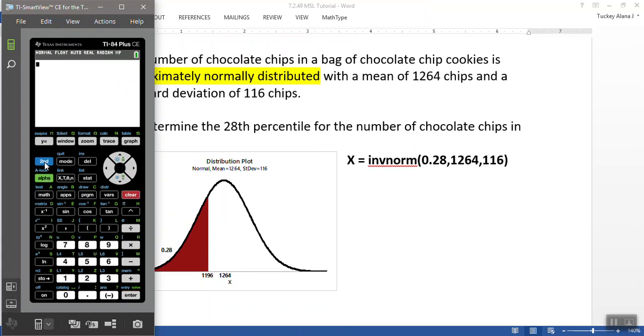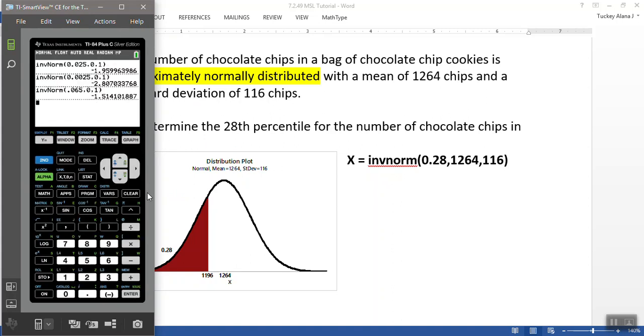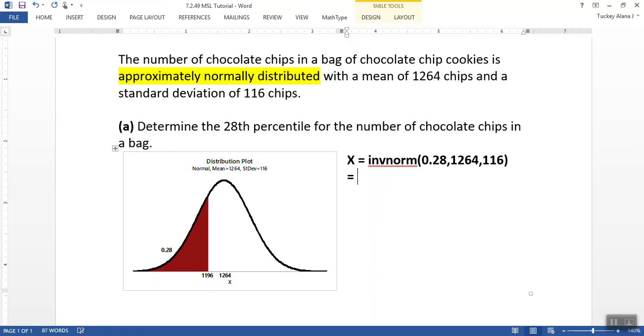So let me grab the calculator real quick. The computer ate my video, so distribution number 3, inverse norm, 0.28, 1264, 116, and I'm going to say left, and press paste and enter. Now, old calculators, you don't have to worry about the left thing. It's there already. So newest calculators need the left part. So let me change my view to a different model so you can see the old model. I would go second distribution, number 3, and I would just say 0.28, 1264, 116. There's no left, center, right option. So that's what I would press, and I would get the same answer, which is 1,196 chips, which matches what the computer program Minitab gave us as well. So that's a good sign.